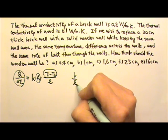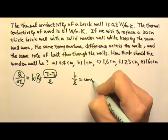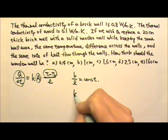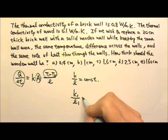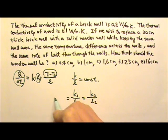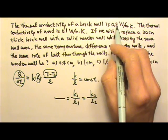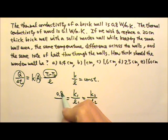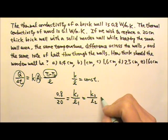So K divided by L should be a constant, which means K1 over L1 should equal K2 over L2. Let's say 1 is the brick. The K is 0.8. The thickness of the brick wall is 20 centimeters.